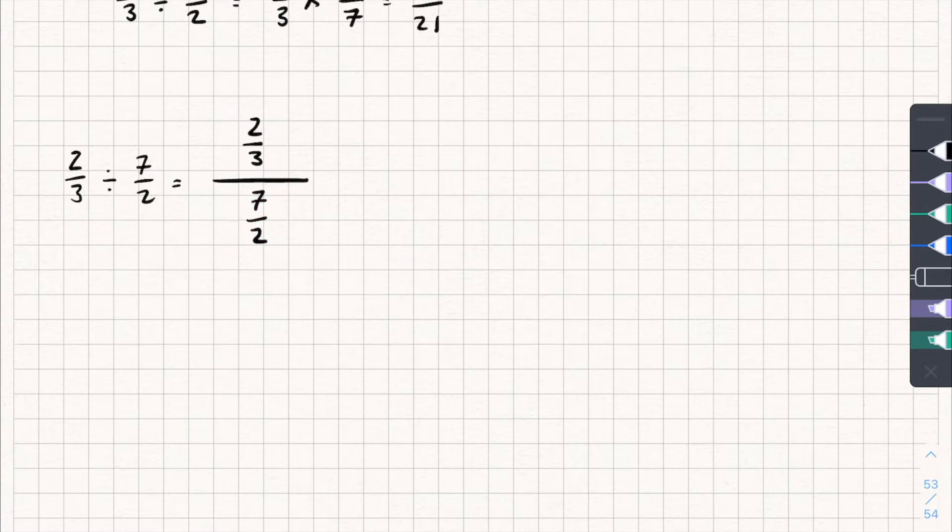I could do it by multiplying the denominator by two over seven, the reciprocal. But that would then change the value of the total fraction, and I want to keep it the same. So I could keep it the same by multiplying it by one.